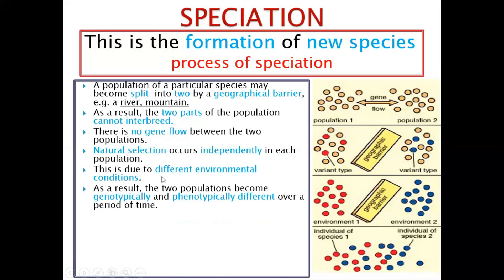As a result, the two populations become genetically and phenotypically different over a period of time. As many generations pass, due to the geographical barrier preventing interbreeding, they start to change. These ones will be wiped out because they are not being favored by the environment — the red ones will survive on one side, and the blue ones will survive on the other.